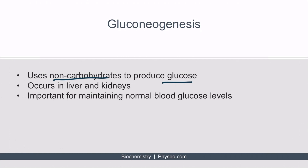It's important to know that gluconeogenesis occurs in the liver and the kidneys. But when we're discussing gluconeogenesis, it's most often with regards to the liver. This pathway is very important for maintaining normal blood glucose levels, especially during periods of fasting.